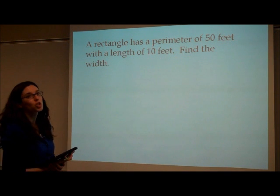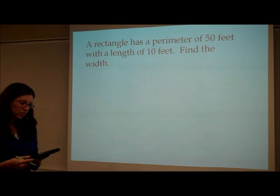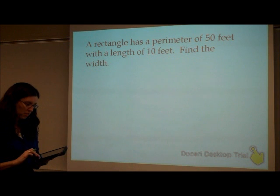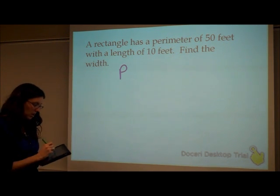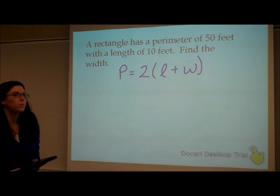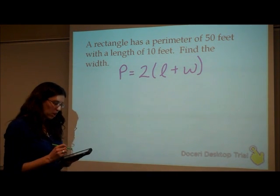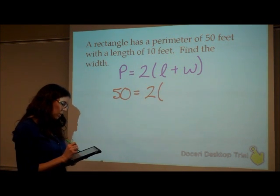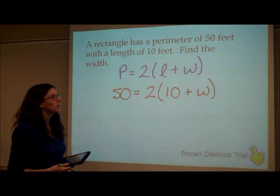Alright, try this one on your own, and then press play to check. So a rectangle has a perimeter of 50 feet with a length of 10 feet. Find the width. So start by writing your perimeter formula. You can use either one. I'm going to use this one, just to show you something different. So going through now and putting in what we know, the perimeter is 50. Two times, what's my length? Oh, it's 10. And then the width is what I'm trying to find.